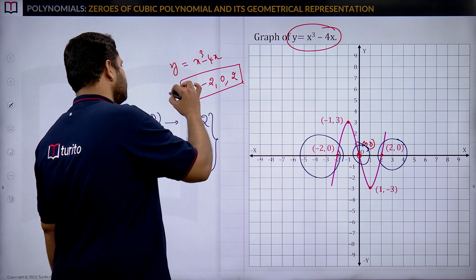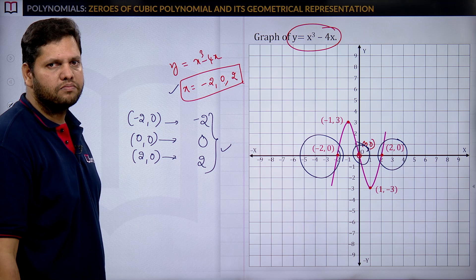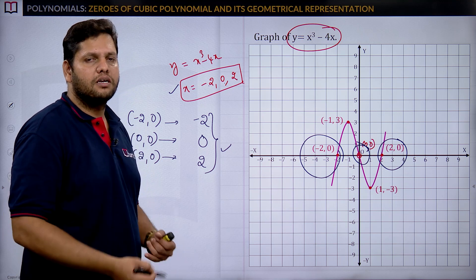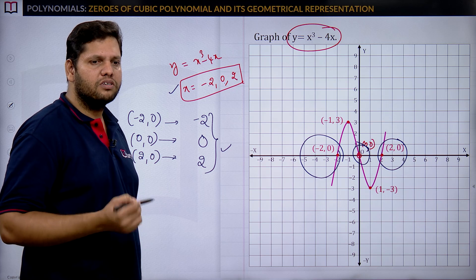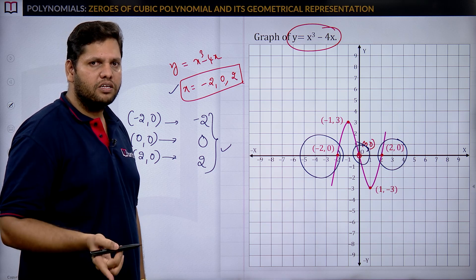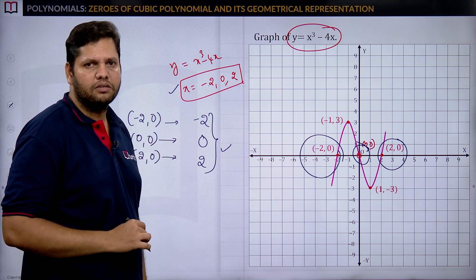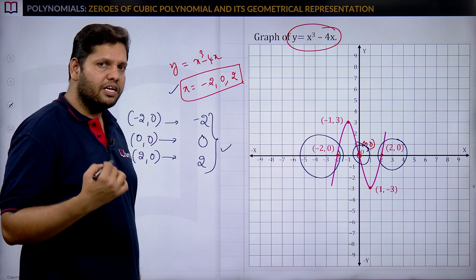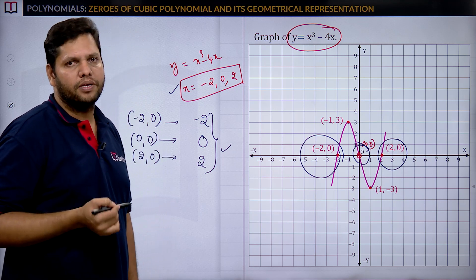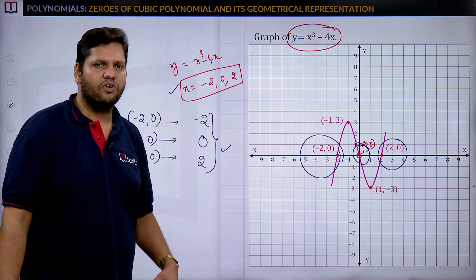To find the zeros of a cubic polynomial theoretically, we equate to zero. Practically, we draw the graph and find the intersection points with the x-axis, then take the x-coordinate values as the zeros. The result is the same by both methods — three zeros for this polynomial.